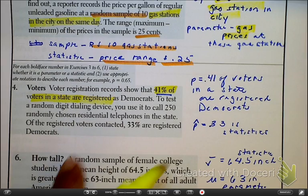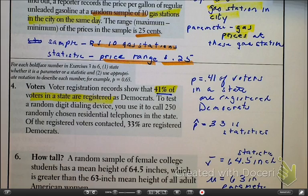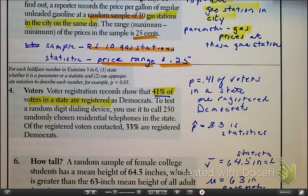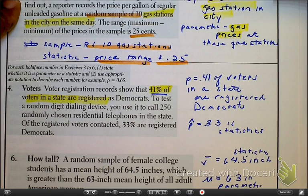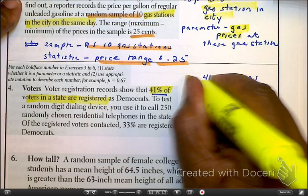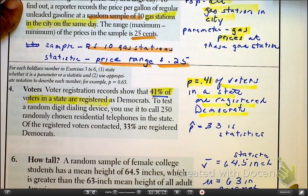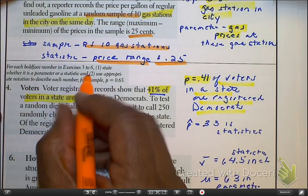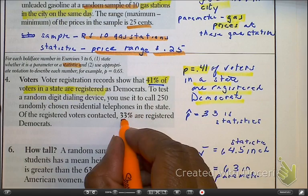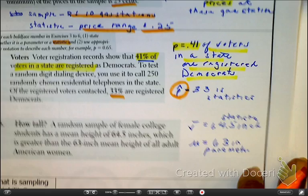Okay, so here, as we look at this to make a determination on what is the parameter and what is the statistic, remember that the parameter is the big picture. That is going to be .41. And the reason it's the 41 percent is because it's talking about all of the voters in the state that are Democratic. But as we look at the other thing that they're asking for is the statistic. Remember the statistic is the small picture in which here we're just looking at 33 percent of the samples. And notice P hat, which is new.